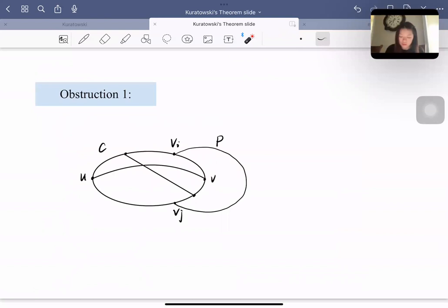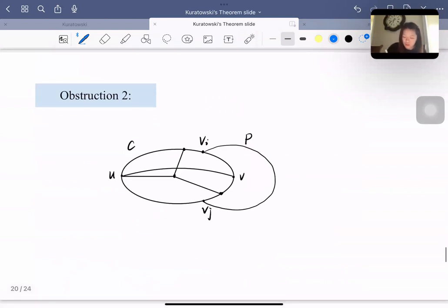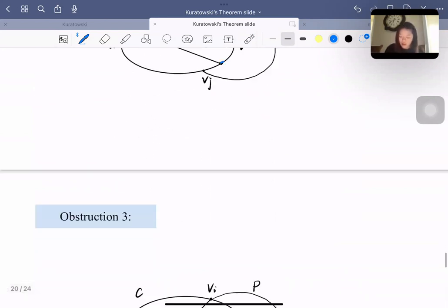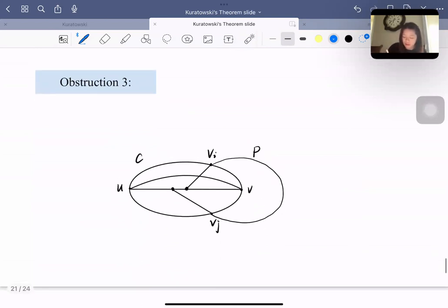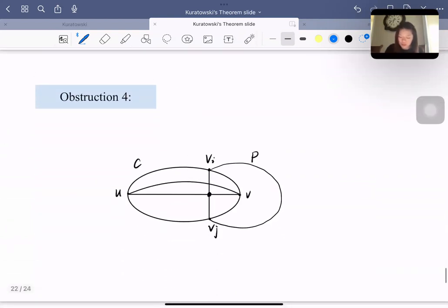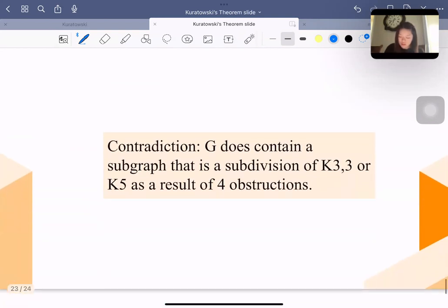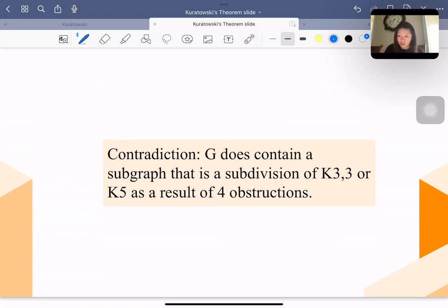Obstruction 1: we can find a subdivision of K3,3. And obstruction 2: here is a subdivision of K3,3 as well. In obstruction 3, we also can find the subdivision of K3,3 in the graph. And for obstruction 4, this is the subdivision of K5. So G does contain a subgraph that is a subdivision of K3,3 and K5 from the previous four obstructions.